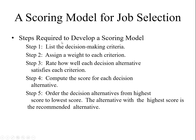To construct a scoring model, the steps are: Step 1 — list the decision-making criteria; Step 2 — assign a weight to each criterion (using a Likert scale, e.g., 1 to 5, where a more important criterion gets a higher weight like 5); Step 3 — rate how well each decision alternative satisfies each criterion; Step 4 — compute the score for each decision alternative; Step 5 — order the alternatives from highest to lowest score. The alternative with the highest score is recommended.